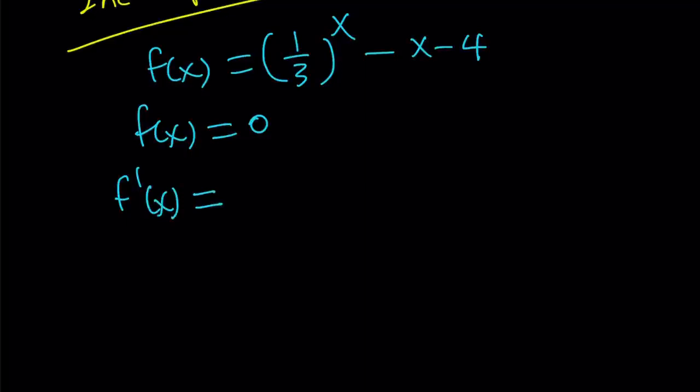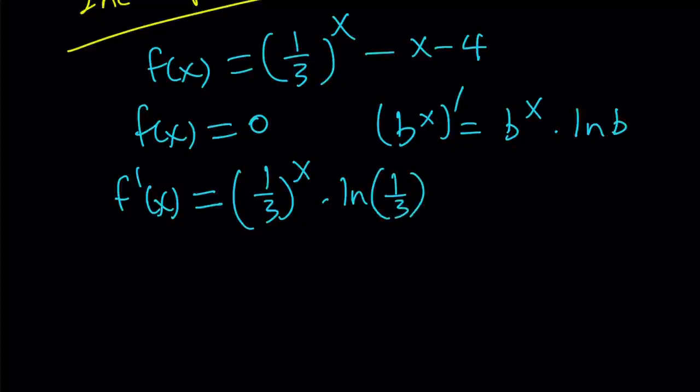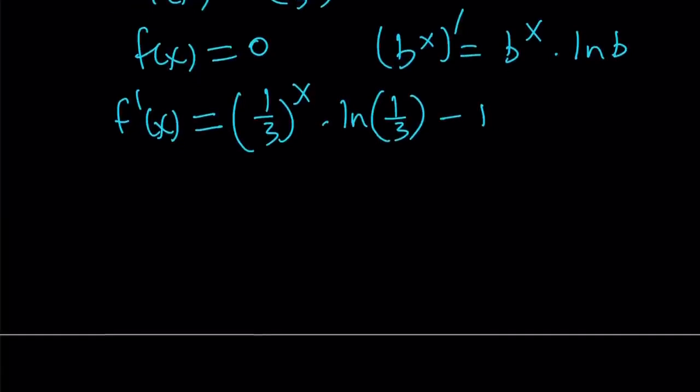Remember, to differentiate b to the power x, how do you differentiate b to the power x? Well, you just write the same thing and multiply by ln b. That is the correction factor. So when we differentiate it, it's going to become 1 over 3 to the power x and I have to multiply it by ln 1 third. And then derivative of negative x is negative 1. Derivative of a constant is 0, so I don't have to worry about it. So, this is the derivative.